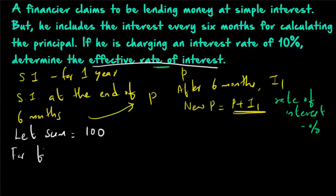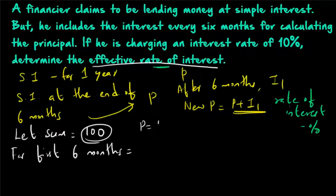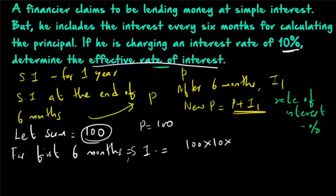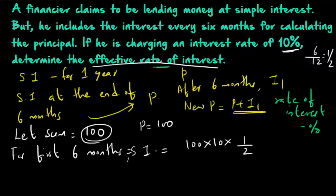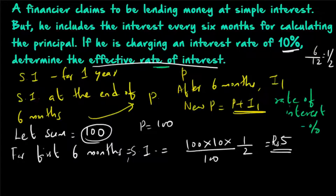For the first 6 months, what is the rate of interest? We can find that out first. For the first 6 months, sum is equal to 100, so P is 100. The simple interest will be equal to 100 into 10 into time, where time is equal to 1/2 (since 6 divided by 12 gives half a year). So P×R×T divided by 100 gives us an answer of 5. So for the first 6 months, simple interest is equal to rupees 5.